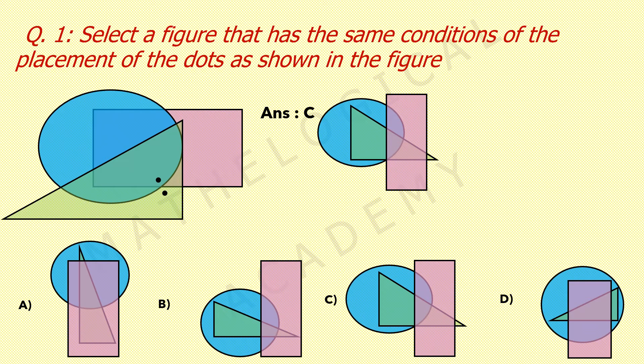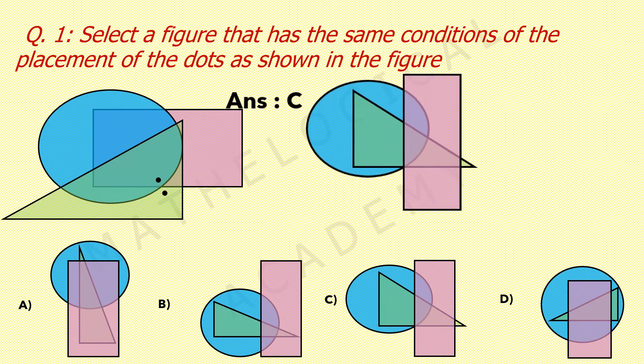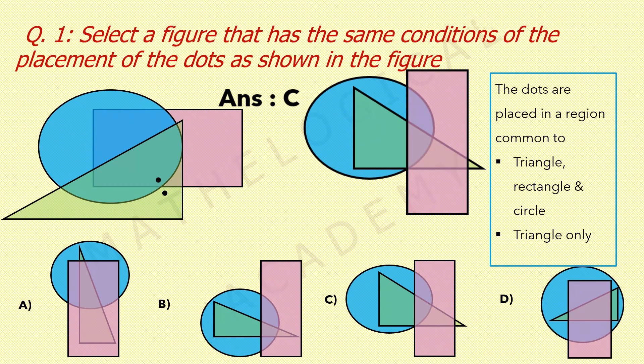Our answer is option C. There are two dots: one dot lies in the region common to square, triangle and circle — common to all the figures. The second dot lies in the triangle only. In option A and option B, we have a region common to all three figures but no region which lies only in the triangle.